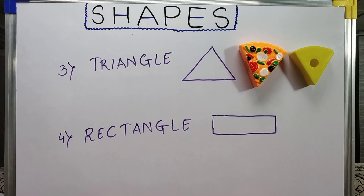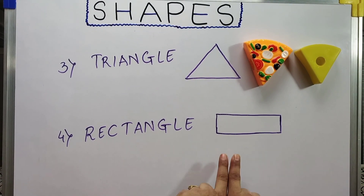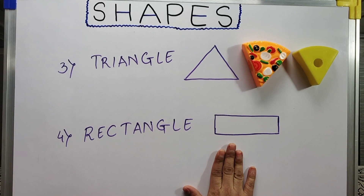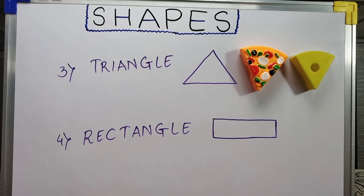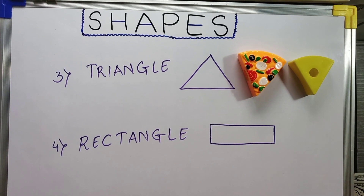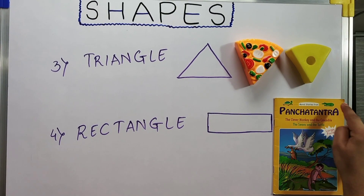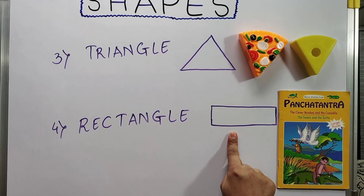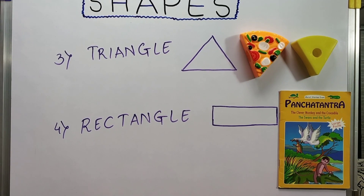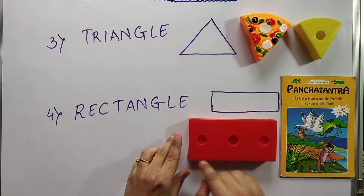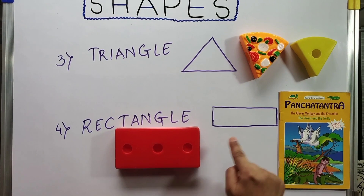The next shape we can consider is a rectangle. First introduce that this is a rectangle, and then show objects related to the rectangle shape. For this, you can show them objects like a book which is rectangle in shape — you can consider their favorite story books. You can even show them a door or a toy which is rectangular in shape, and then ask them to relate the object with the shape.